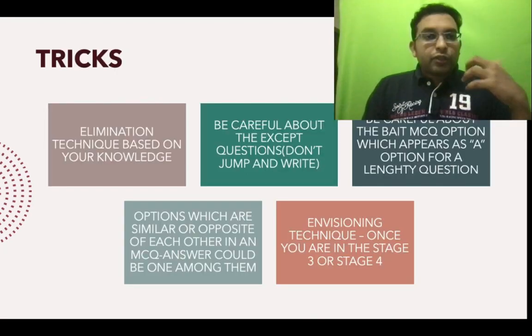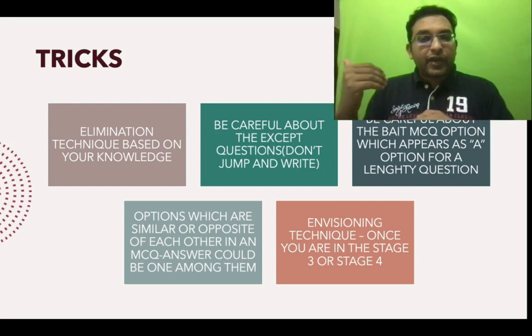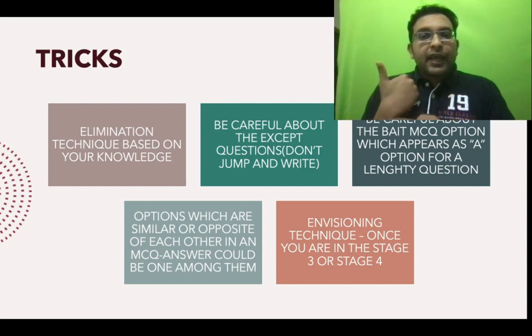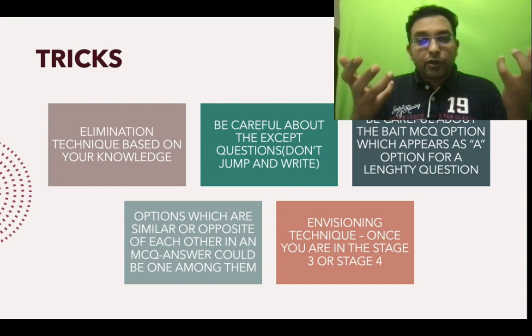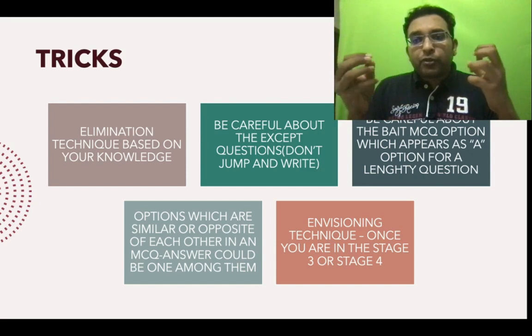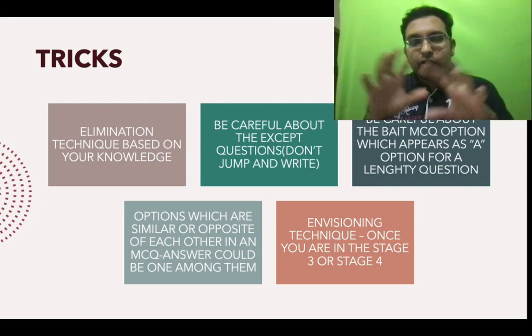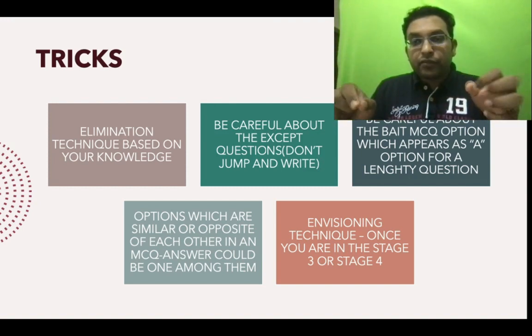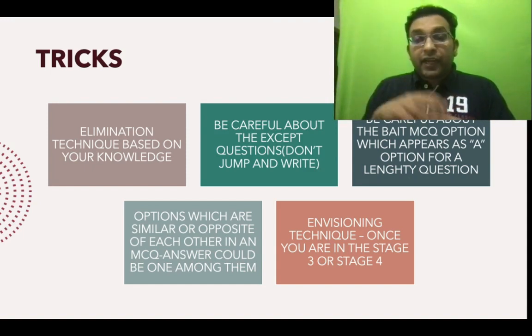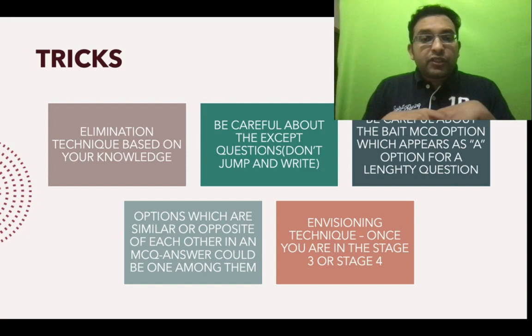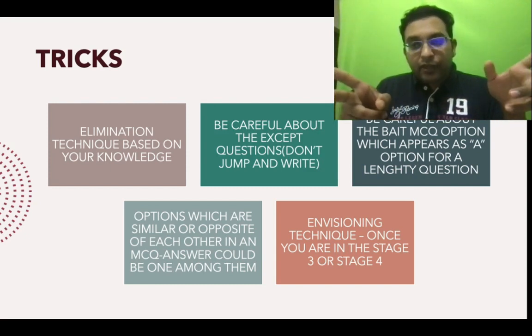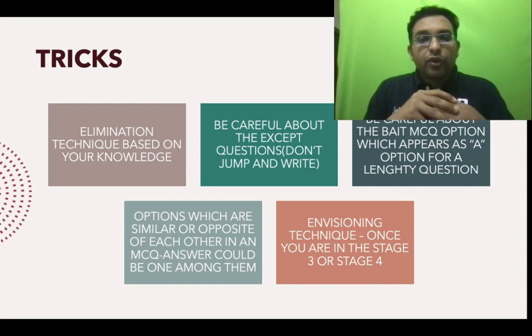Tricks would be to eliminate the least suitable answer and be careful about the except question. Many aspirants miss the except or the not in long questions. Be careful about the bait MCQ option in long questions - there will be a probable wrong answer as an option. Always look for that. Options which are similar or opposite of each other - one among these could be the answer, so you can shortlist between these two.